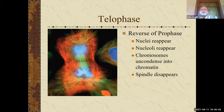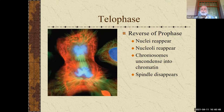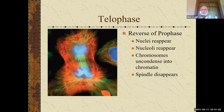Telophase is really the reverse of prophase. The nuclear membranes reappear — the membrane gets rebuilt — and the nucleoli reappear as well. The chromosomes uncondense back into chromatin, and you can see them start to fall back apart. Then all the spindle fibers, microtubules, and associated structures disappear.